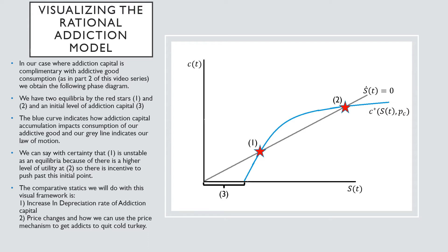The comparative statics that we'll do in this framework is to think about an increase in the depreciation rate of addiction capital, and also how price changes can be used to get people to quit consumption of this addictive good cold turkey.